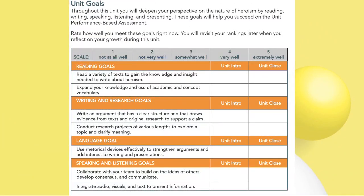We'll also talk about unit goal setting. At the beginning of every unit, you will have to rate how good you are in certain things — in reading, writing, language, and speaking. You'll be rating yourself from one to five and you have a chart to do that. At the end of the chapter, you'll be rating yourself again to see if you have improved during this period of study.